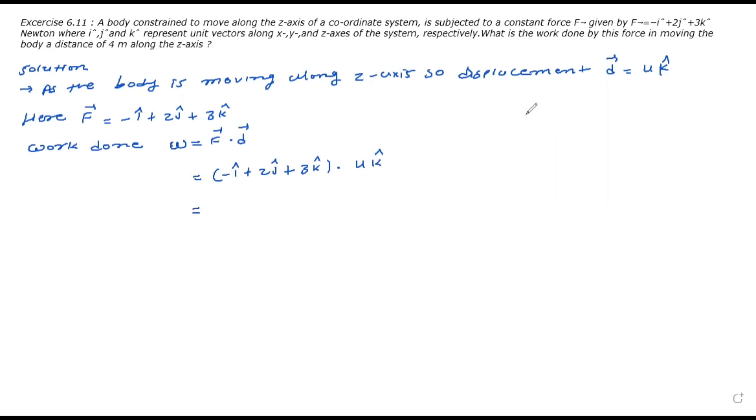So as we already learned the dot product or scalar product, we know that i dot j, j dot k, and i dot k is 0, because the dot product of two perpendicular unit vectors is 0, and that of two parallel unit vectors is 1.